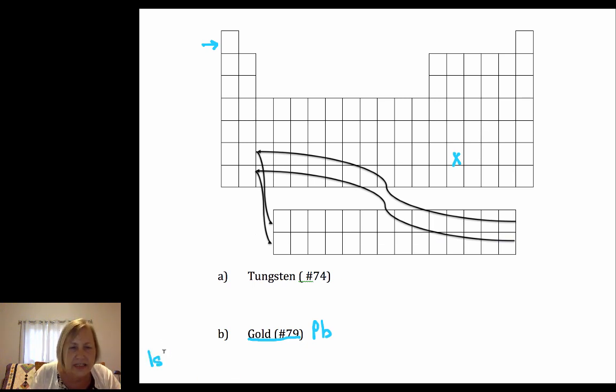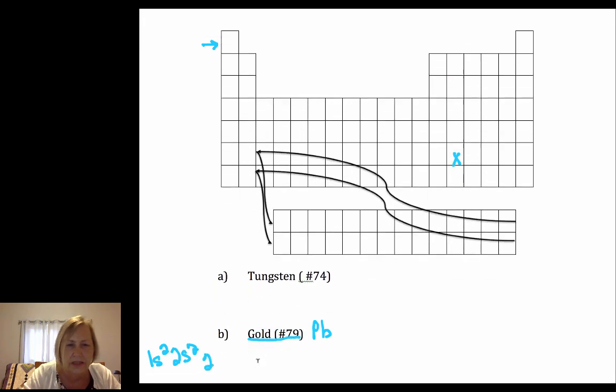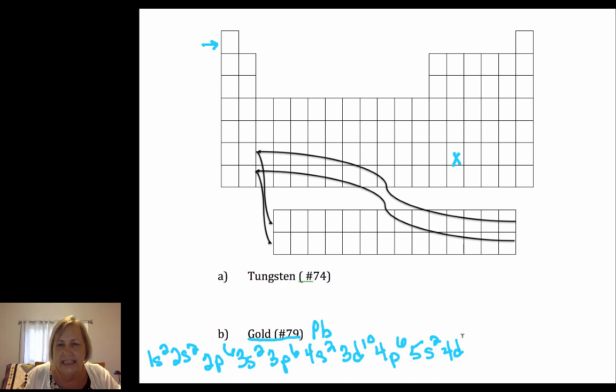So lead is 1s2, 2s2, 2p6, 3s2, 3p6, 4s2, 3d10. I'm assuming you're getting good at these. 4p6, 5s2, 4d10, 5p6. So I just did 5p6.